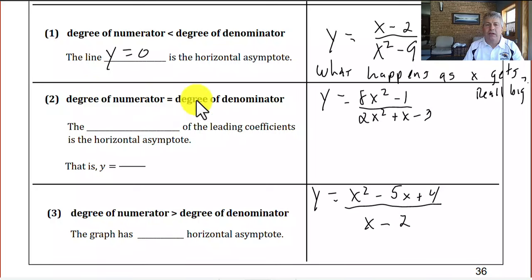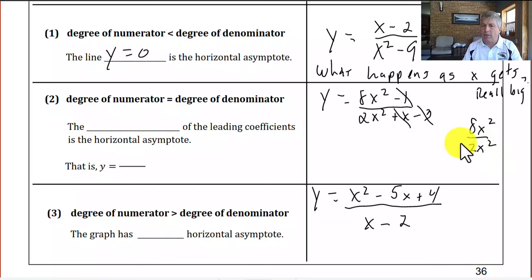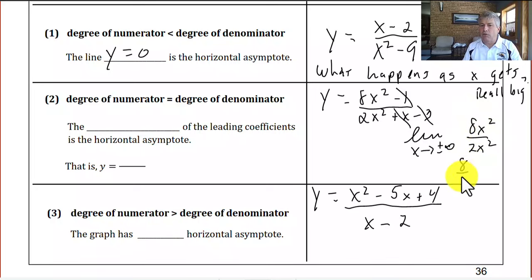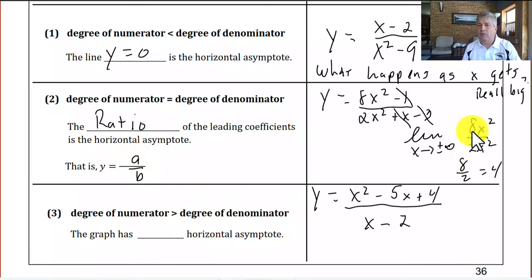In sample two, the degree of the numerator equals the degree of the denominator. As x gets really big, the lower-degree terms lose influence — putting a billion in for x and squaring it makes the x term irrelevant. It becomes a battle of 8x squared over 2x squared. The x squareds cancel, leaving 8 over 2, which equals 4. So the ratio of the leading coefficients gives the horizontal asymptote: y equals a over b, in this case y equals 4.